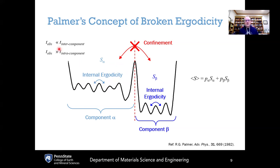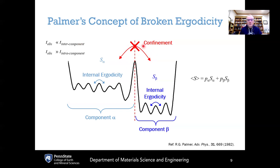Buried in this is the assumption that the observation timescale t_observed is much shorter than the inter-component transition time — we simply don't observe the system long enough to allow inter-component transitions. At the same time, the observation timescale is much longer than the intra-component transition time, meaning within a component, transitions occur fast compared to observation. So there are three relevant timescales: fastest are transitions within a component, the middle is the observation timescale, and the longest is the timescale for transitions between components.